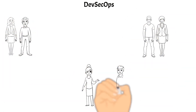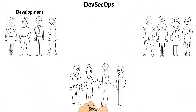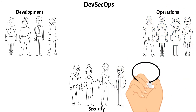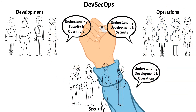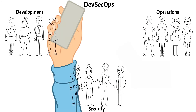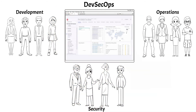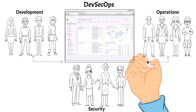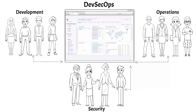DevSecOps requires some form of understanding between the development team, the security team, and the operations team. Cross-training takes time and can have its challenges. By using the F5 distributed cloud console, each team can create and manage their configuration using the same management console.